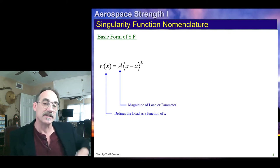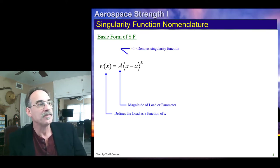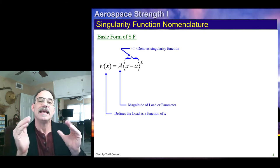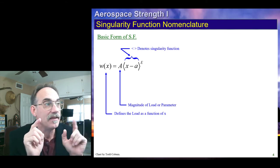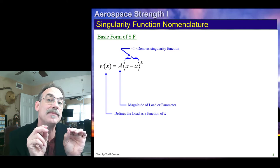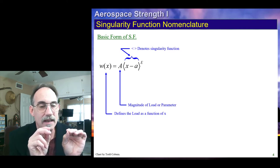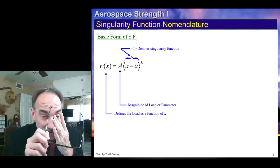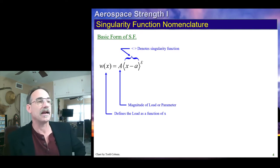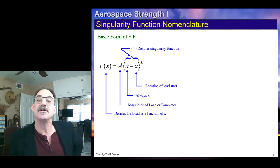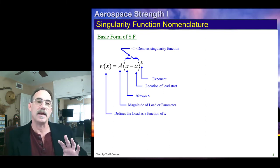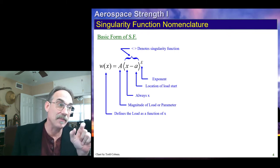The function has a constant — typically the load magnitude or slope — followed by these bracket carats. Instead of regular parentheses, we use carats for singularity functions. Whenever we see these carats, it notifies everybody that this is not a regular function — it is a singularity function that needs to be treated differently. Inside the carats we always have x minus a, where a is the location of the start of the load, followed by an exponent e.